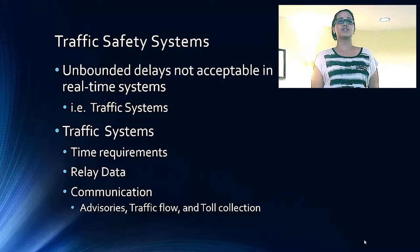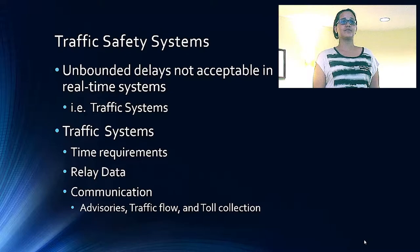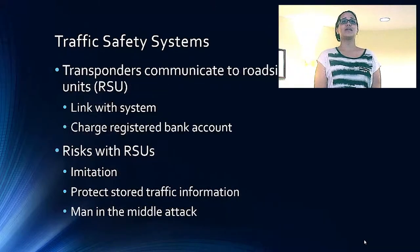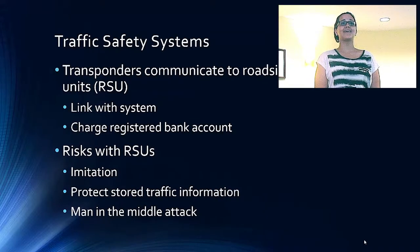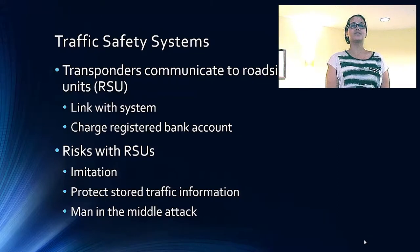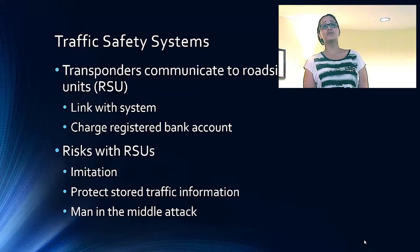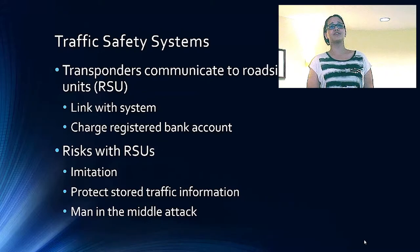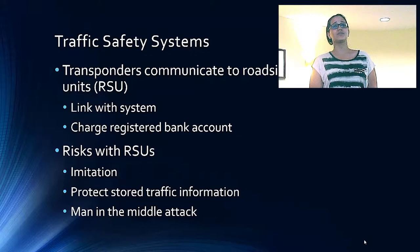There exist potential risks for traffic control systems that will soon rely on 802.11P communication for traffic flow, toll collection, and advisory. The transponder communicates with the roadside unit, or RSU, and then links with the system to take the set amount of money out of the registered user's bank account or credit card. The risks with these RSUs include possible imitation, making it important to restrict physical access to these units and secure the data stored within them. Encryption keys are also necessary to protect the stored traffic in the RSUs.